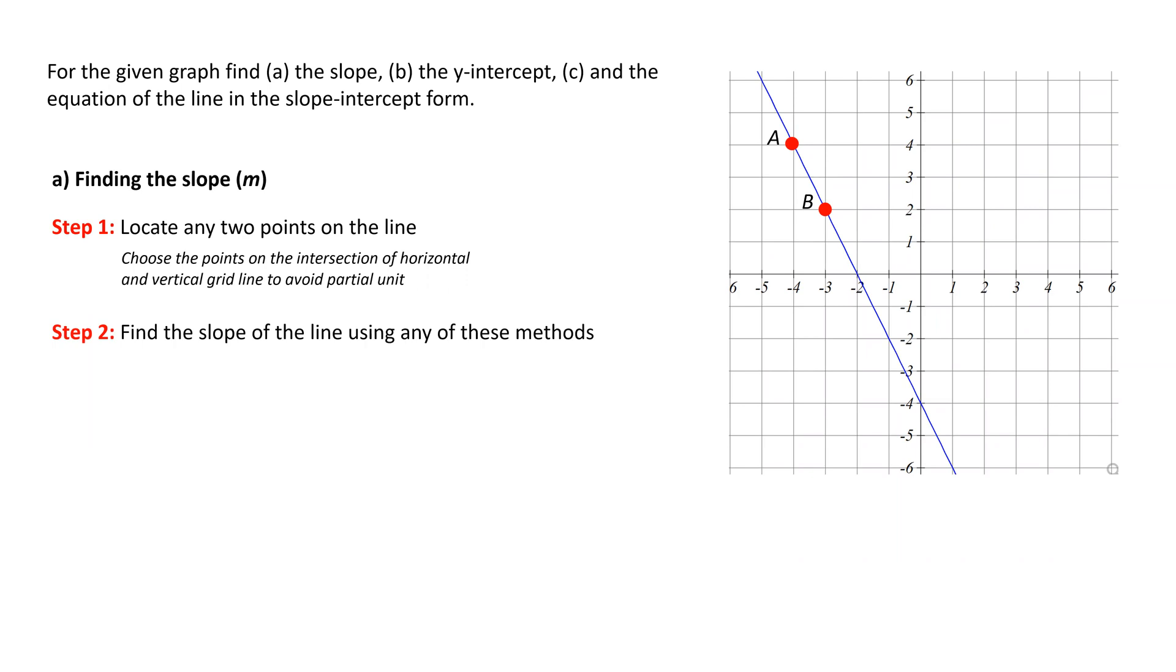Next step is to determine the slope of the line using either of the following methods. Method 1 uses the equation of the slope and the coordinates of the two points, so we will need to have the coordinates of points A and B.